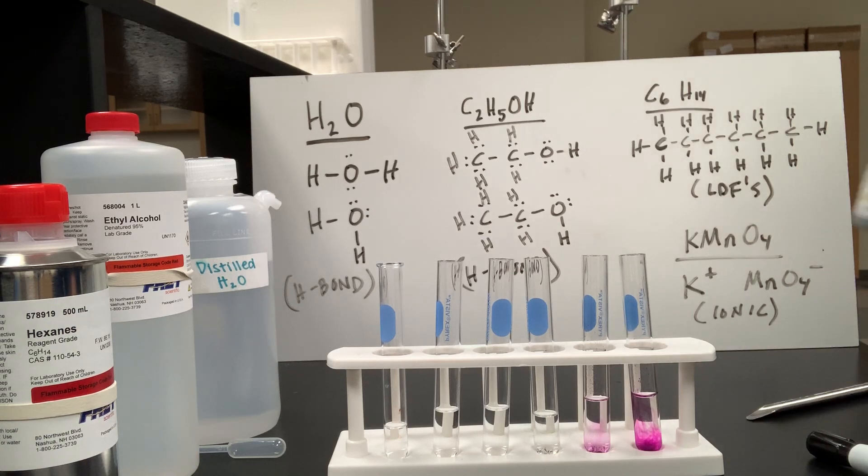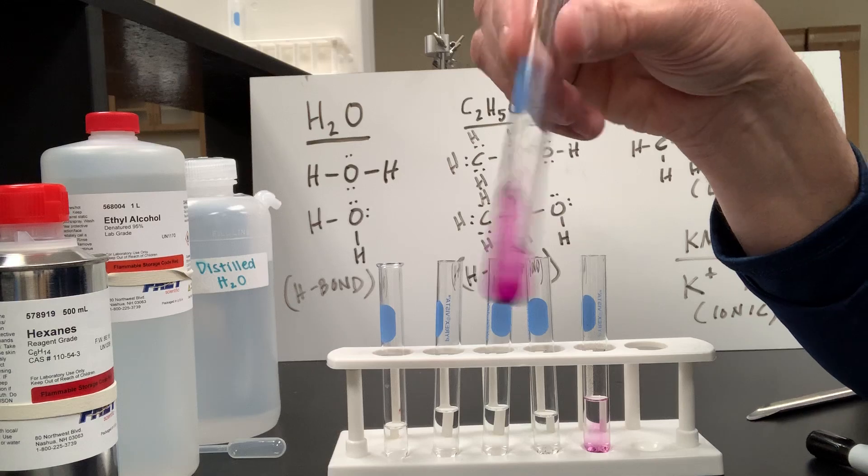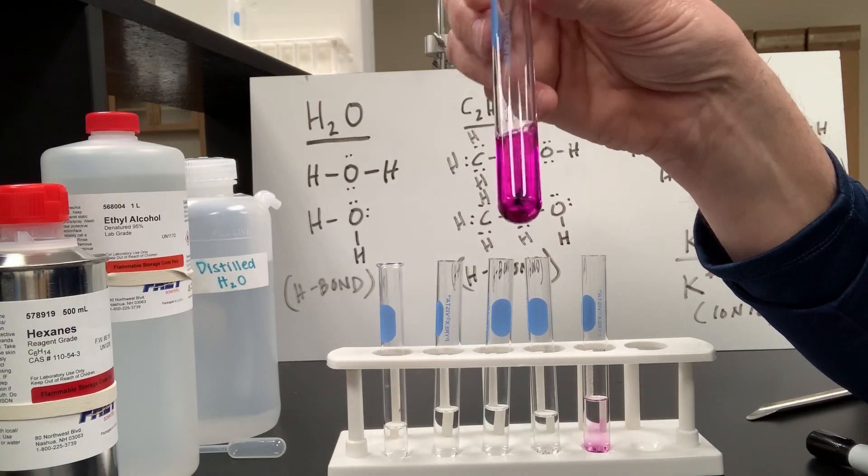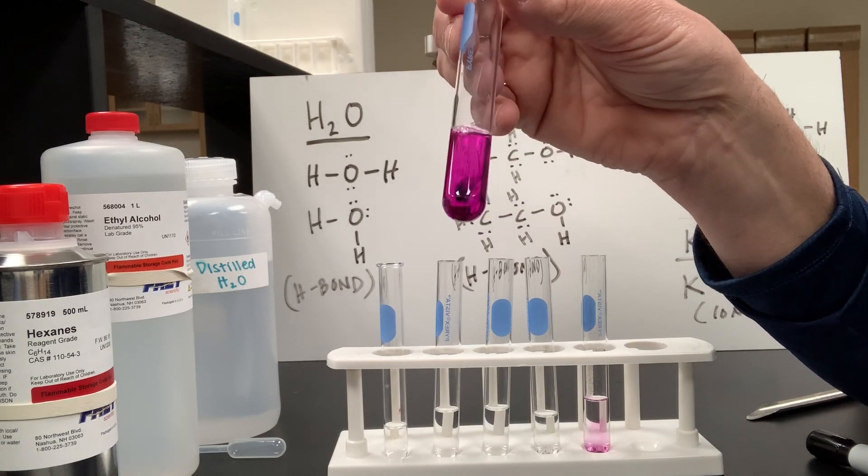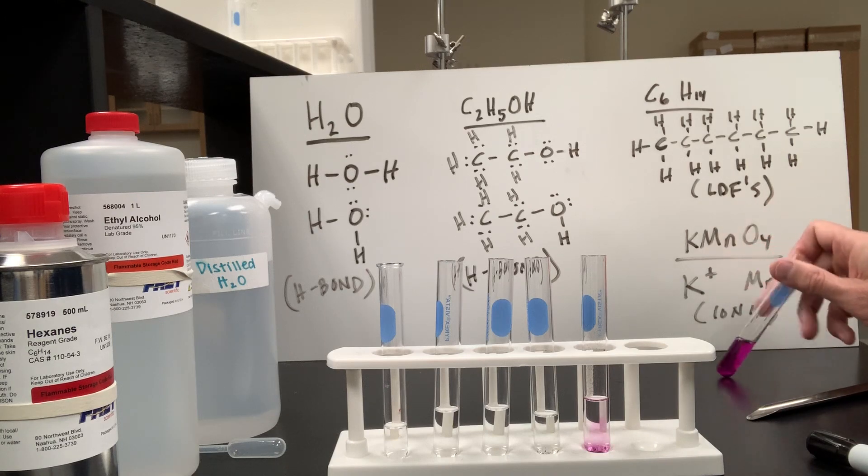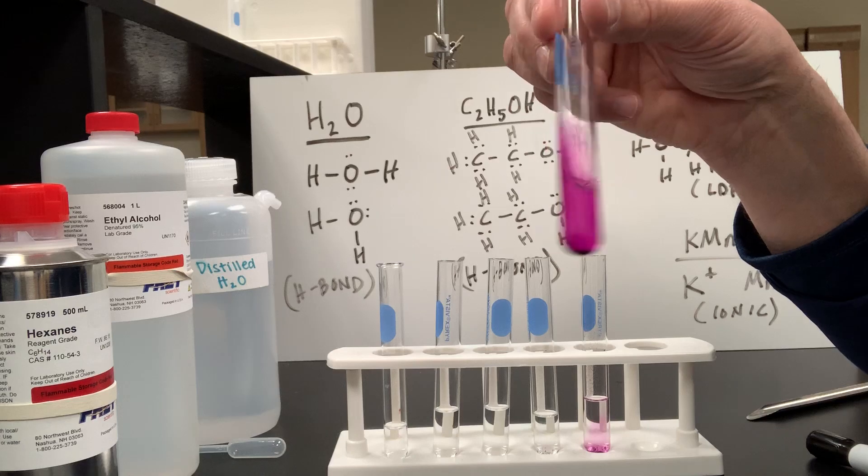And you should notice some differences between the three. Let's shake these up a little bit. And you'll see that potassium permanganate dissolves quite well in water. Now, that plays a role here. Water is a polar molecule. It can hydrogen bond and has a positive and negative end. Doesn't potassium permanganate also have a positive and negative end? They are, so to speak, like each other.